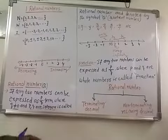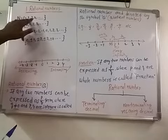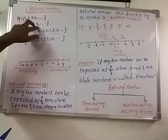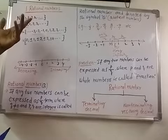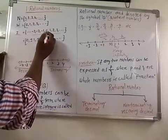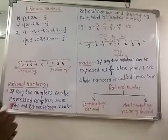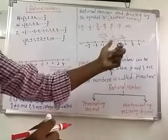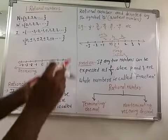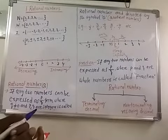Compare this with natural numbers: how many natural numbers are between 1 and 2? There are none. How many whole numbers are between 2 and 3? There are none. How many integers are between −1 and 0? There are none. But in rational numbers, there are infinitely many rational numbers between any two rational numbers. Because of this, rational numbers cannot be written as a finite set.